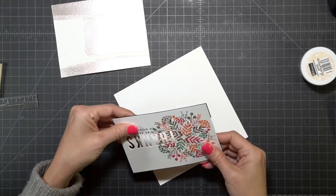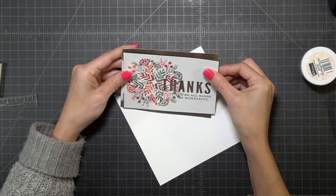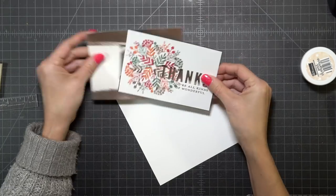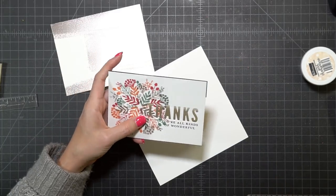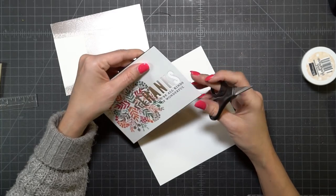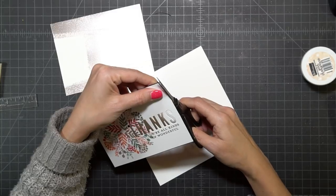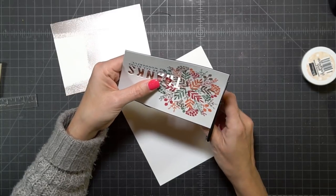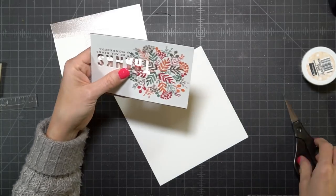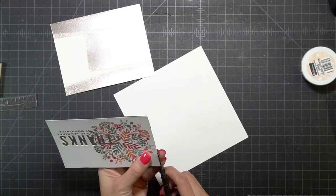I'm just going to take my scissors and trim off any of that overhanging black cardstock just before I mount it. It'll be much easier to do it before I add it to my background. Once I have that done, I'm going to add a ton of foam to the back of it. I don't like my cards to sag in the middle, so I will always add a lot of foam tape to the back.